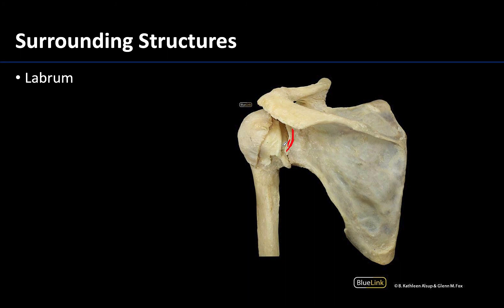The labrum traces the borders of the glenoid fossa, and usually if you have a direct view looking straight at the glenoid fossa, that's where you can see the labrum better. Looking at this angle it's hard to differentiate it from the surrounding joint capsule. Thank you for your time and attention as I discuss my favorite joint — the shoulder joint. I hope you have a great rest of your day.